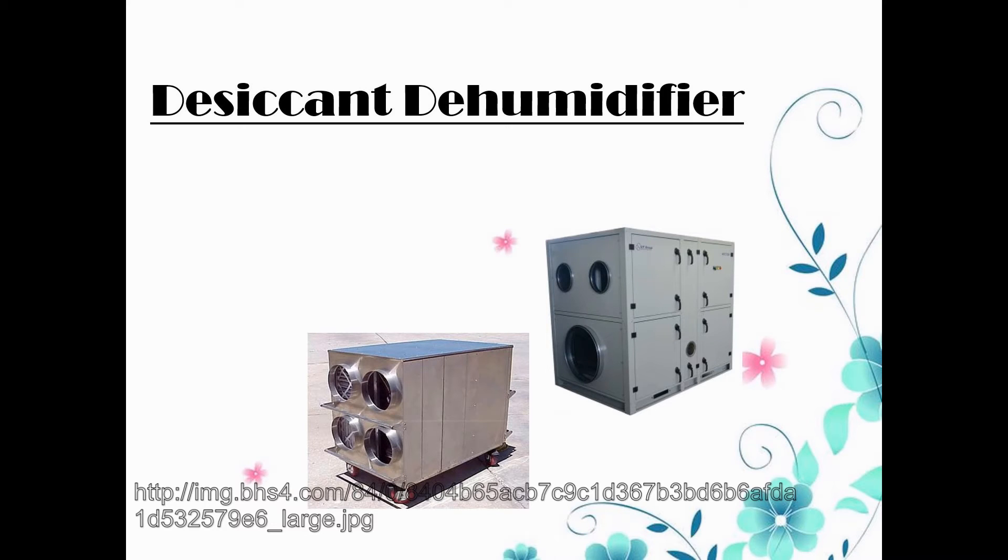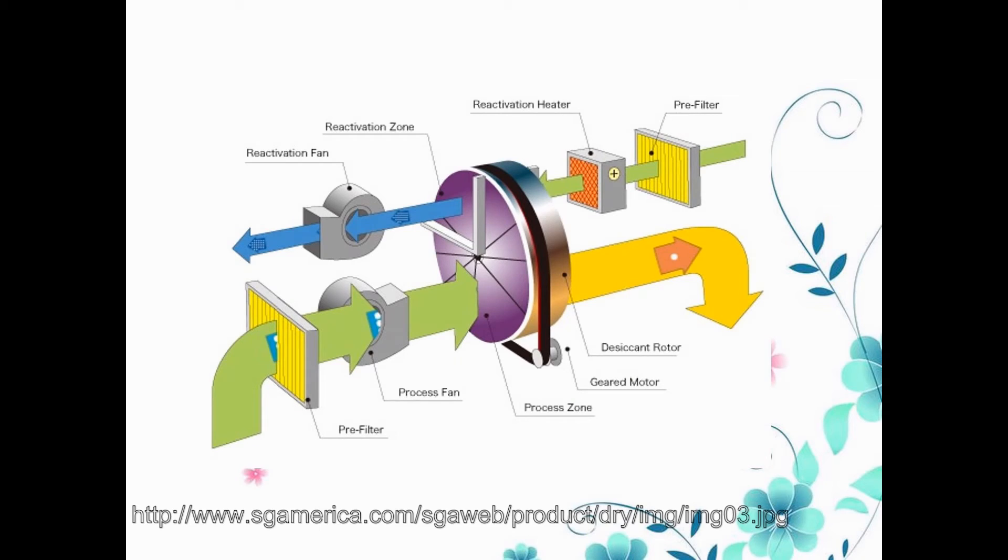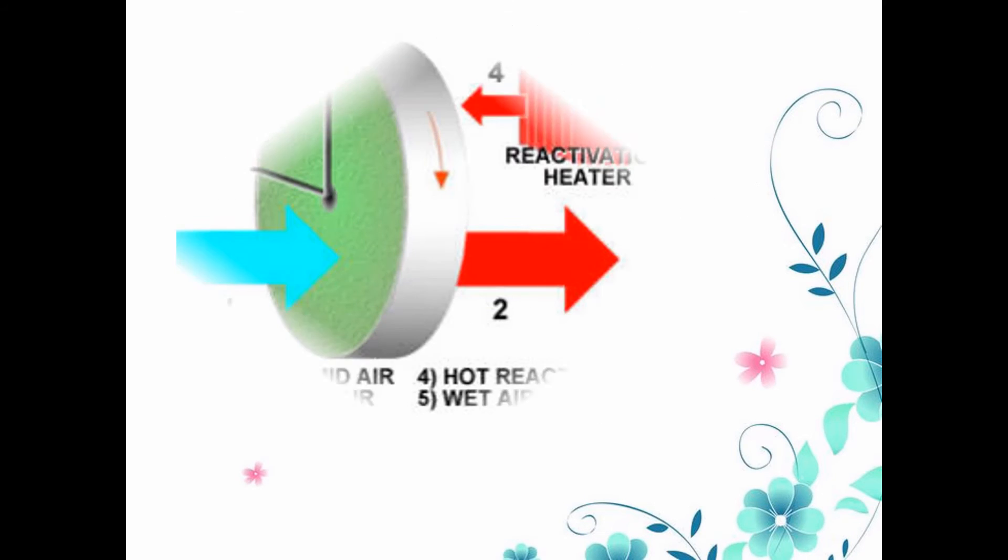Desiccant dehumidifiers are another type of dehumidifier that work by passing air through a rotor containing water absorbent desiccant material. They generally contain five major components: two fans, a heater, a motor, and a rotor containing the desiccant material.